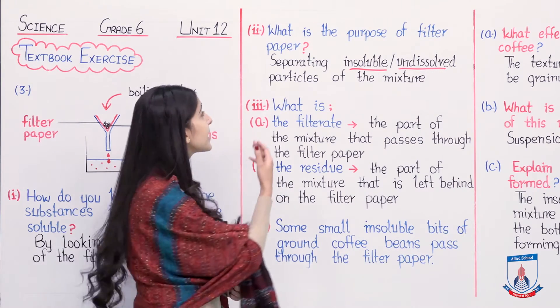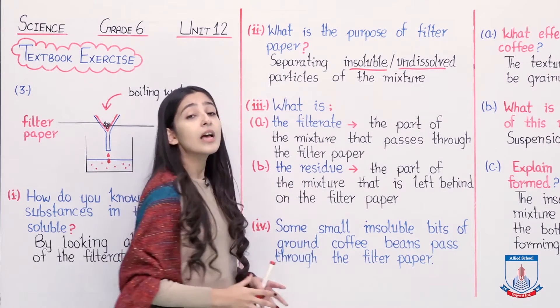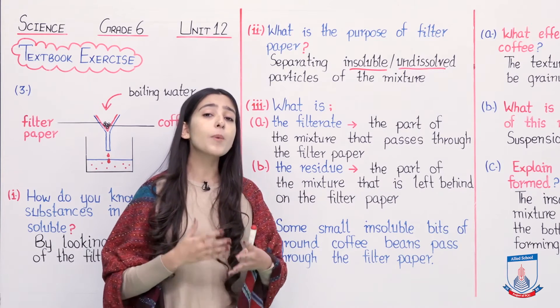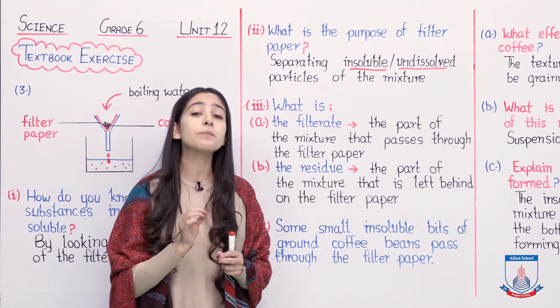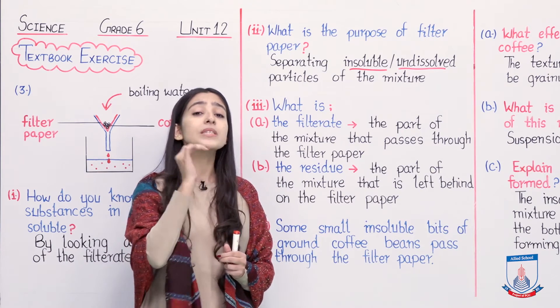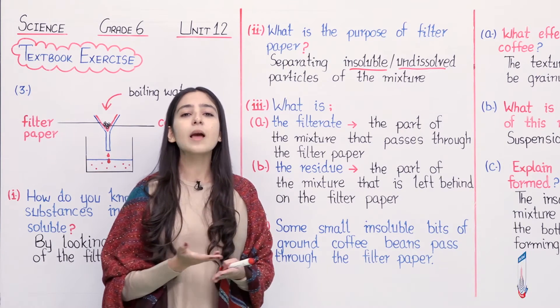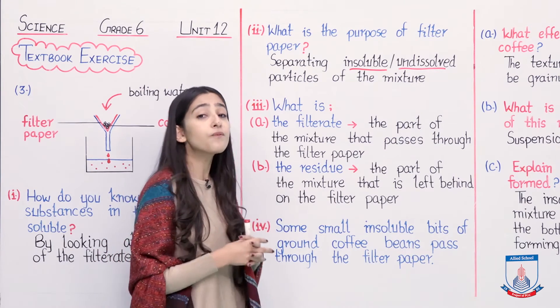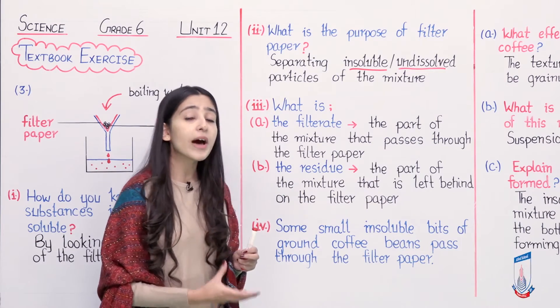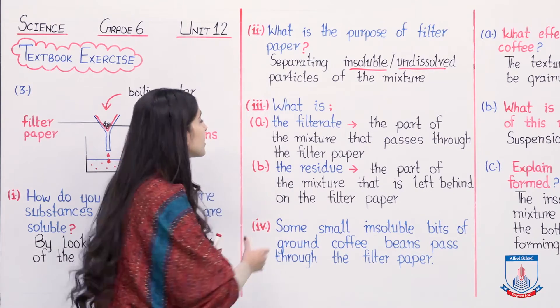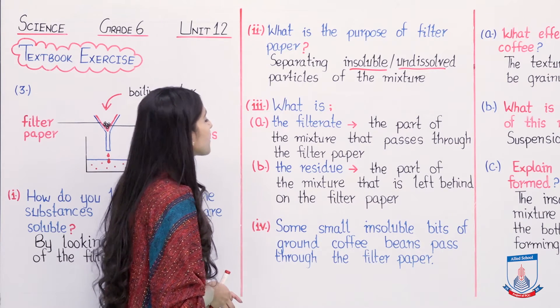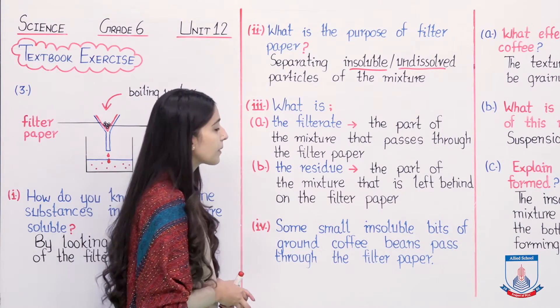Normally, if someone asks you why do we use filter paper, then you should know: to separate components of a suspension. A suspension is a mixture in which solid particles are not dissolved in liquid, meaning they are insoluble. To separate these insoluble particles from our liquid, we use a filter paper.